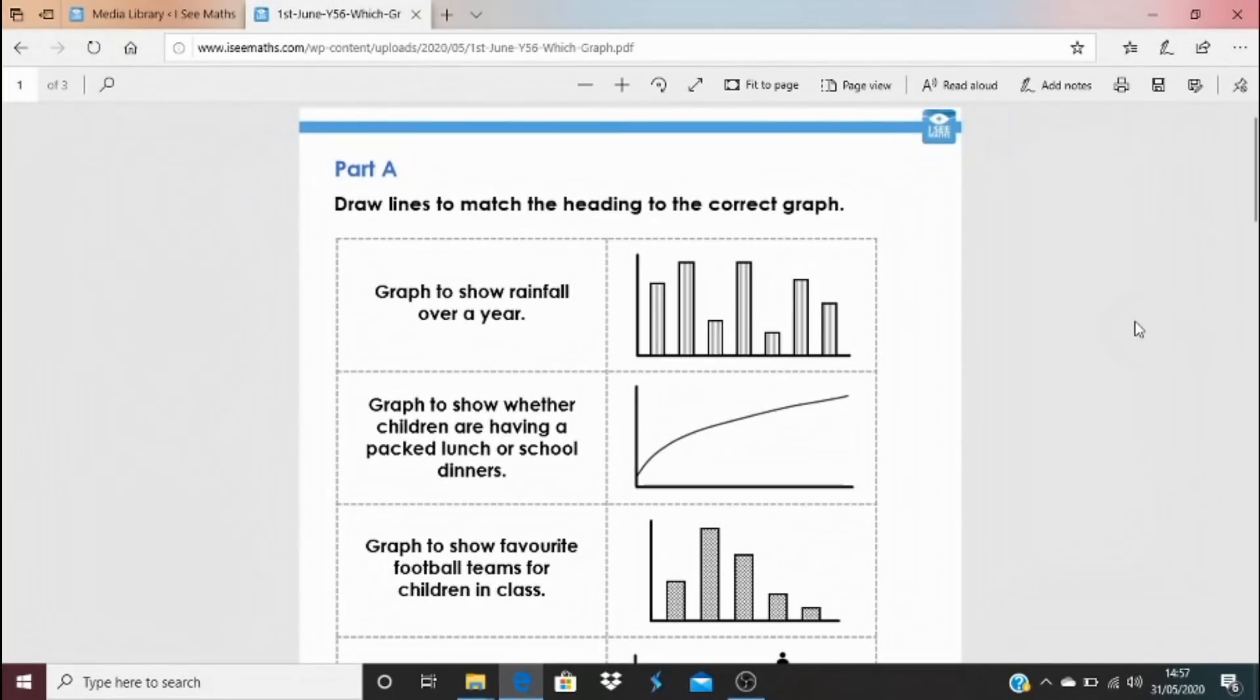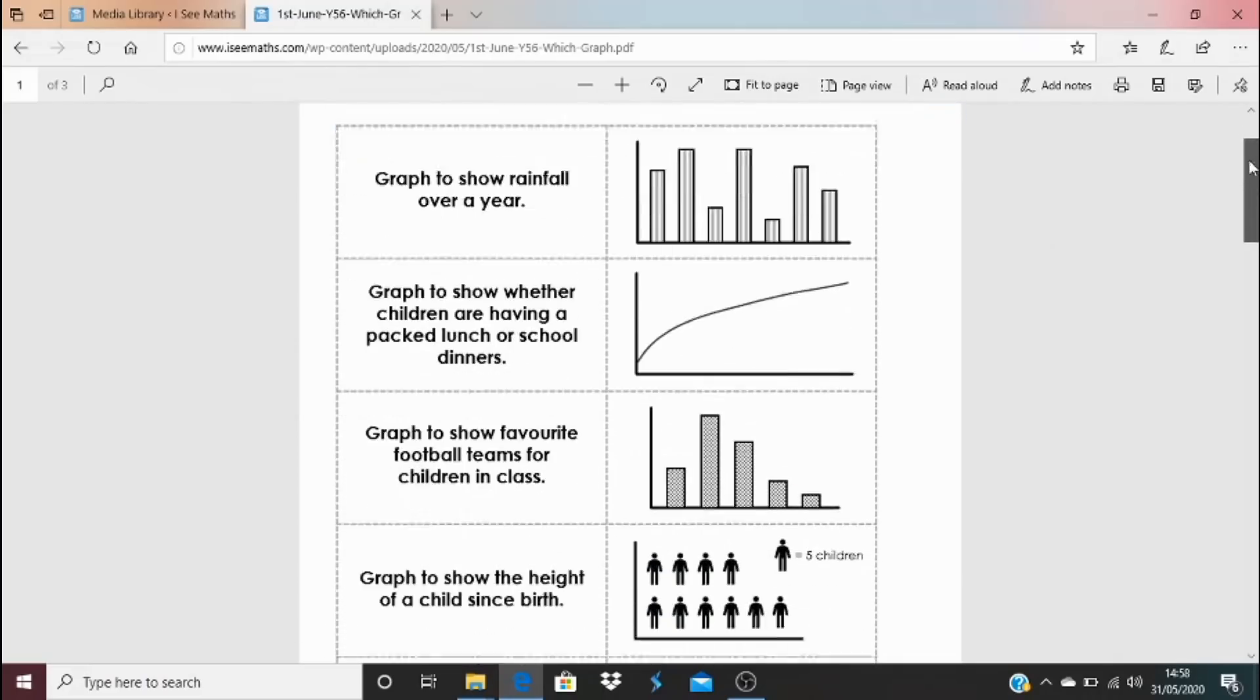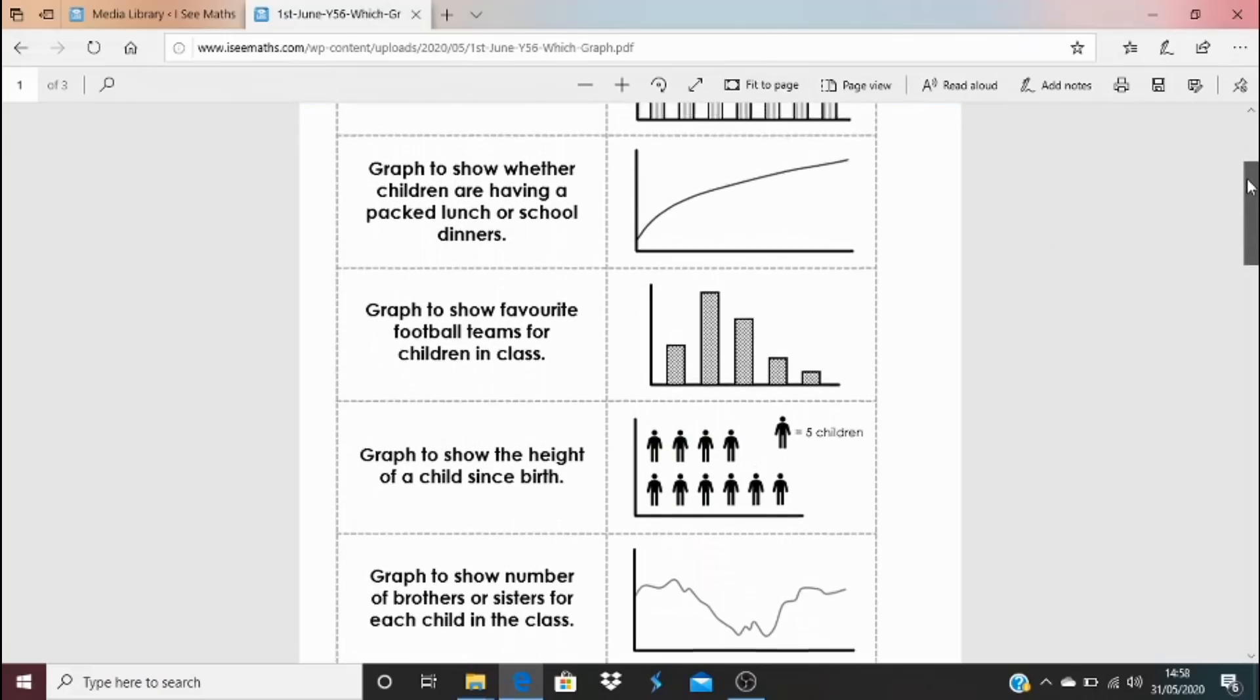So to find these tasks, click on that blue link that's just underneath the video, wherever you're viewing it from. So for part A, draw lines to match the heading to the correct graph. So have a look, we've got all the headings on the left here, all the graphs on the right. But which heading matches to which graph? And how do you know?